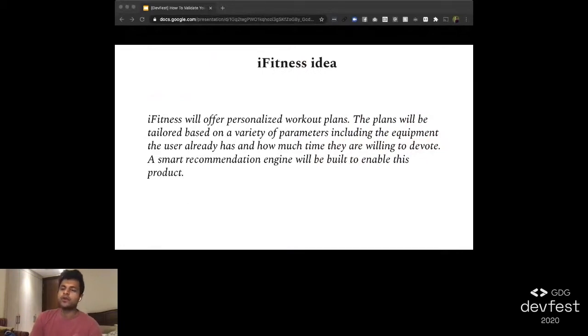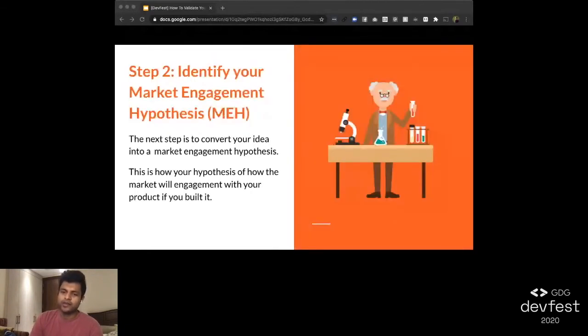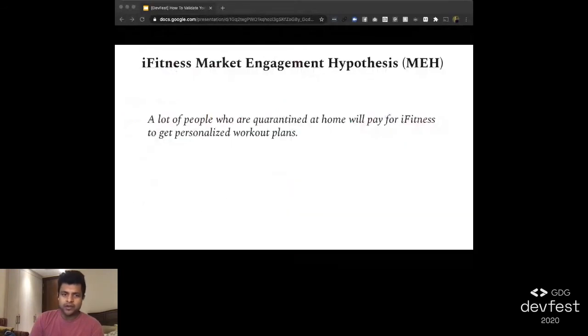The next step is to convert your idea into a market engagement hypothesis. This might sound like a fancy phrase, but what it means is how you think the market will engage with your product when it launches. This is super useful because it forces you to think about your target customer, which is the market. In our case for the iFitness app, here's what a market engagement hypothesis might look like: A lot of people who are quarantined at home will pay for iFitness to get personalized workout plans. So this is a small step forward. We've identified roughly who we think the customer is, which is people quarantined at home. But how will we objectively measure if the idea is worth building or not? We need to get a lot more specific.